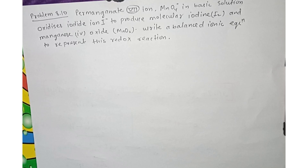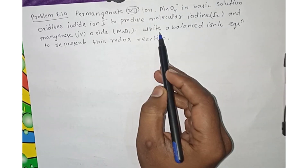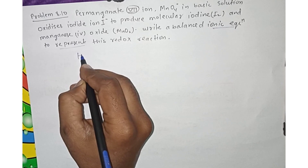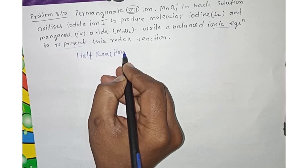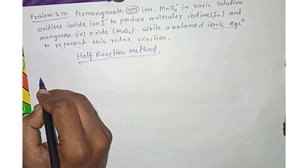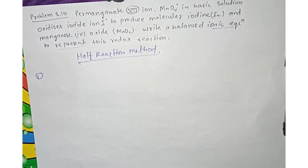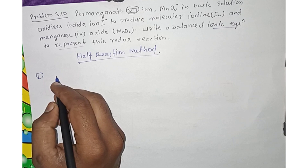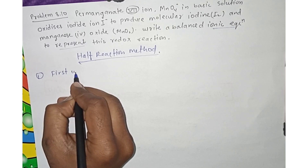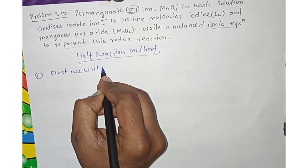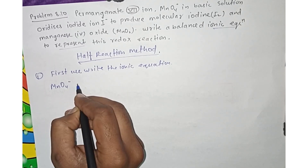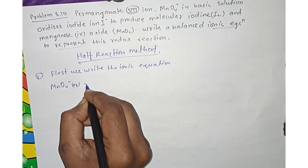From problem 8.10, solve for the redox reaction. We need to write a balanced ionic equation to represent this redox reaction. First, we write the ionic equation. MnO4⁻ plus Iodine minus — these are the reactants we start with.